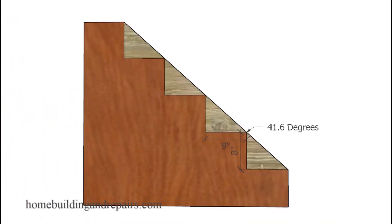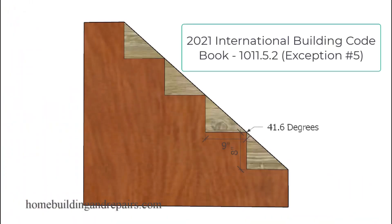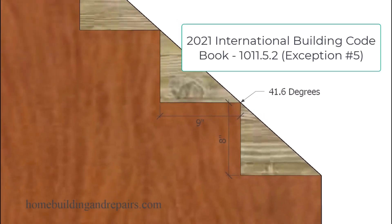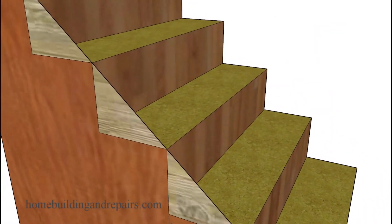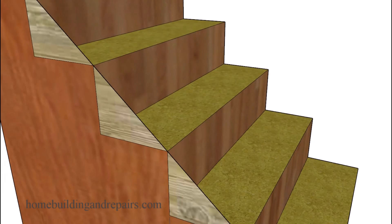Another one that might work for some of your projects. I've seen these building codes in a variety of different states. It will have a nine inch minimum tread depth and an eight inch maximum riser height, providing us with a 41.6 degree angle. I do not recommend building a stairway like this if you can avoid it. As a matter of fact, I only built one of these once and that was going up to an attic storage area.